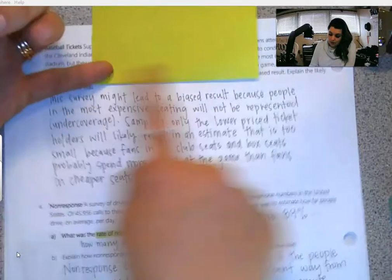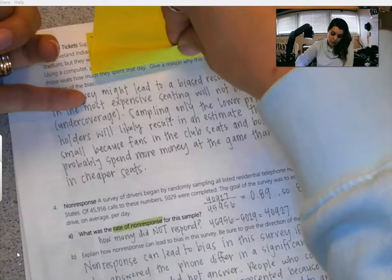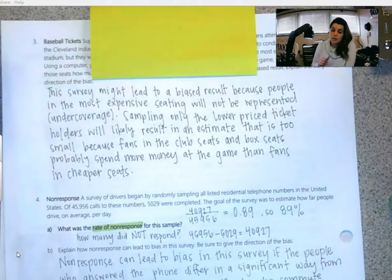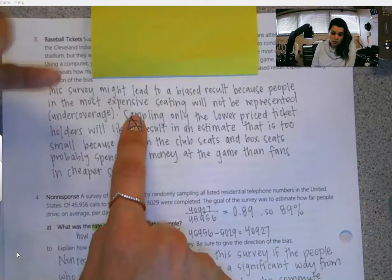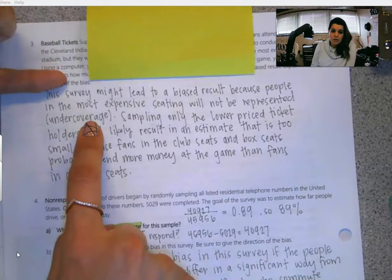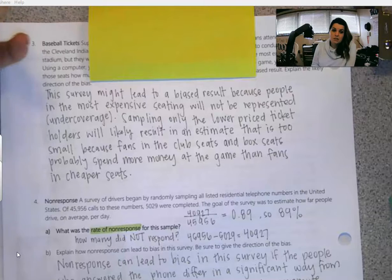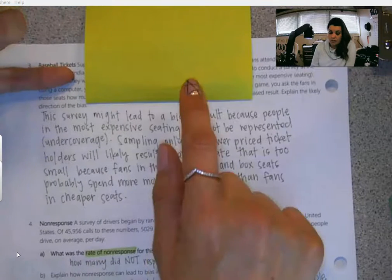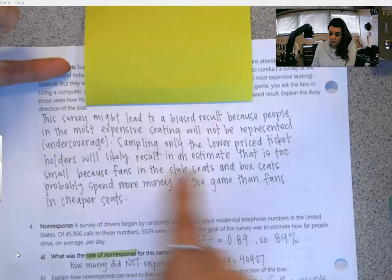For the baseball tickets, it says: give a reason why the survey might yield a biased result and explain the likely direction of the bias. So I'm just going to do those two things — give a reason and explain the bias. My reason is that people in the most expensive seating will not be represented — that's undercoverage. And sampling only the lower price ticket holders will likely result in an estimate that is too small because fans in the club seats and box seats probably spend more money at the game than fans in cheaper seats.